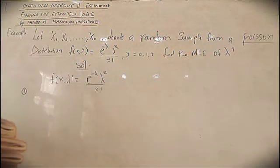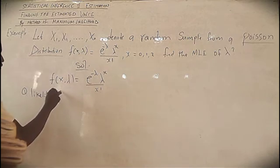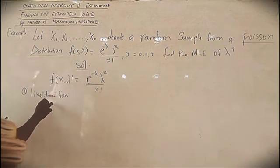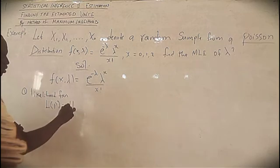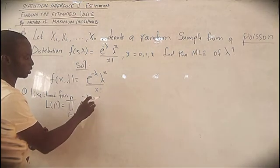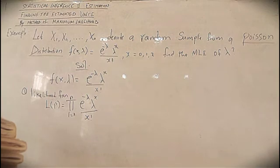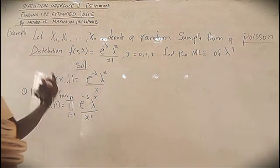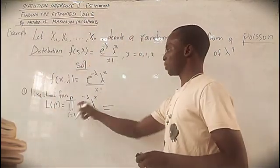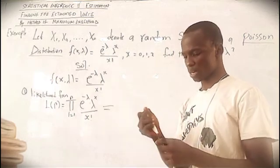Step one is to take the likelihood function. So if you are taking the likelihood function, it is L(λ) equal to the product — you are multiplying. We get a product involving exp(−λ·x1) times λ^x over x factorial, and x moves from x1, x2, x3 up to xn. So this can be simplified.